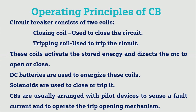There are two coils used in this ACB: a closing coil, which is used for closing the circuit, and a tripping coil, which is used for tripping. These coils activate the stored energy and deflect the moving contact for open or close. DC batteries are used to energize these coils.